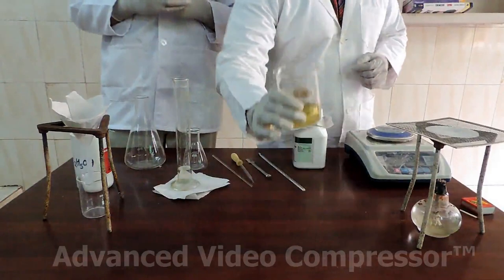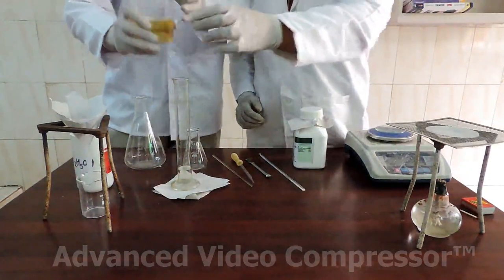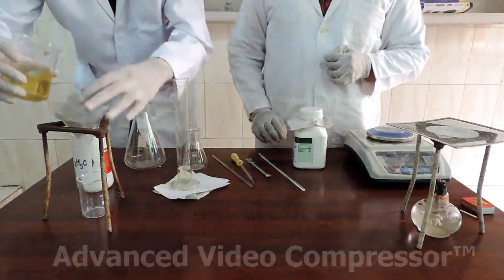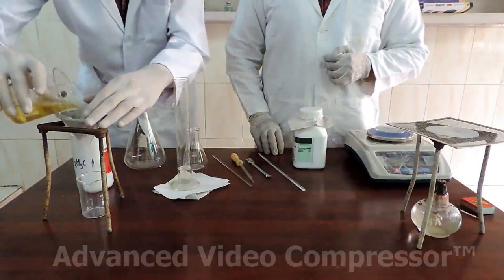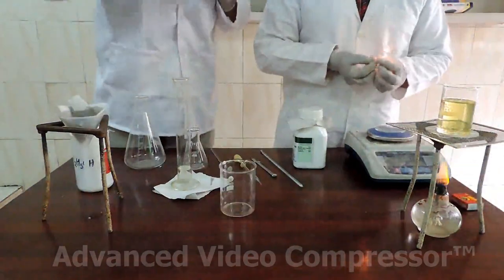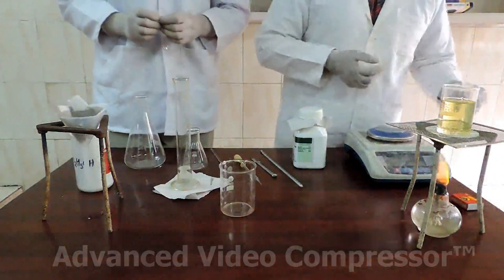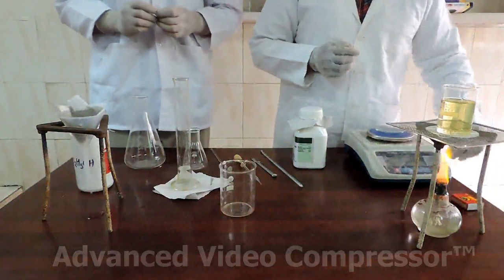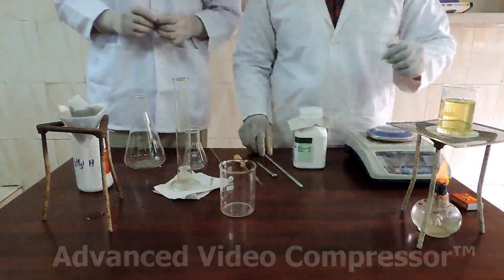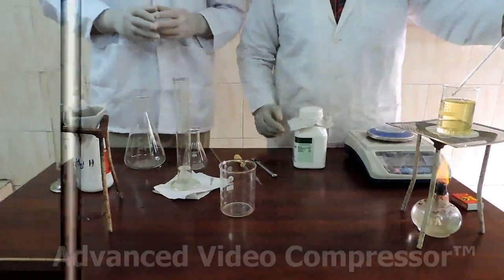This is 100 milliliters of used cooking oil which we are going to filter in order to remove any impurities present in it. The next step is heating the oil to 60 degrees Celsius which should be monitored using a thermometer.